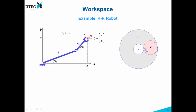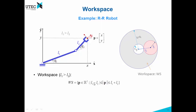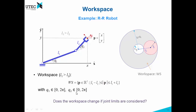In this case, this length is the sum of L1 plus L2, and this other length is the difference between L1 and L2. So the workspace lies between these two circles. If we want to say it mathematically, we can express it like this: the workspace consists of all points such that the distance from the origin lies between L1 minus L2 and L1 plus L2. This is assuming that both joints can go from zero to two pi.